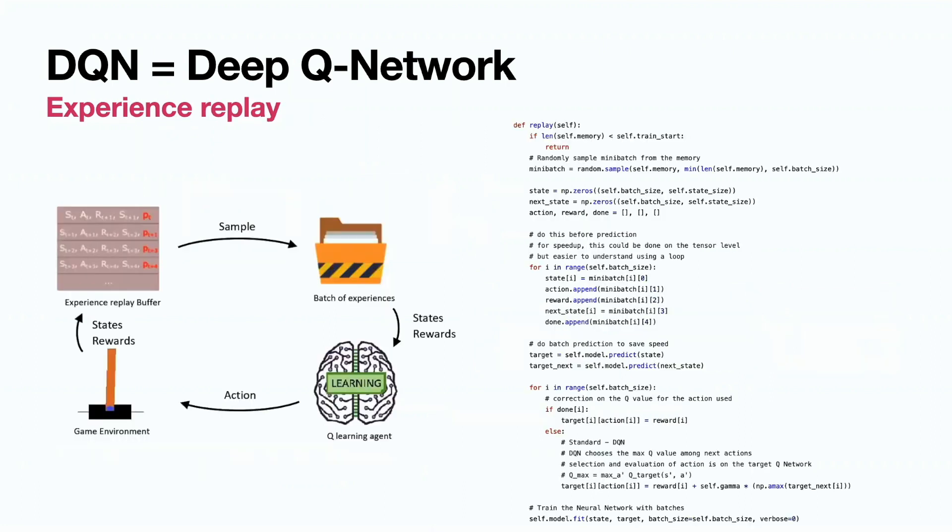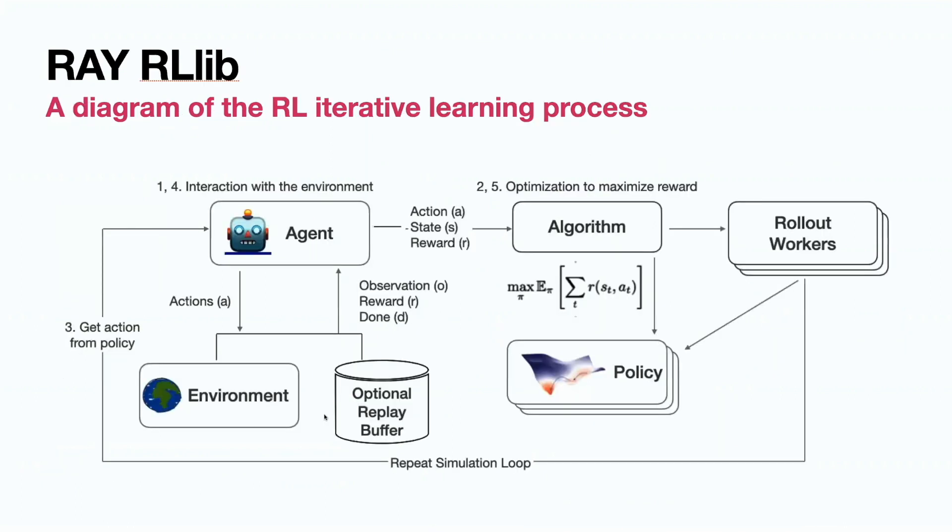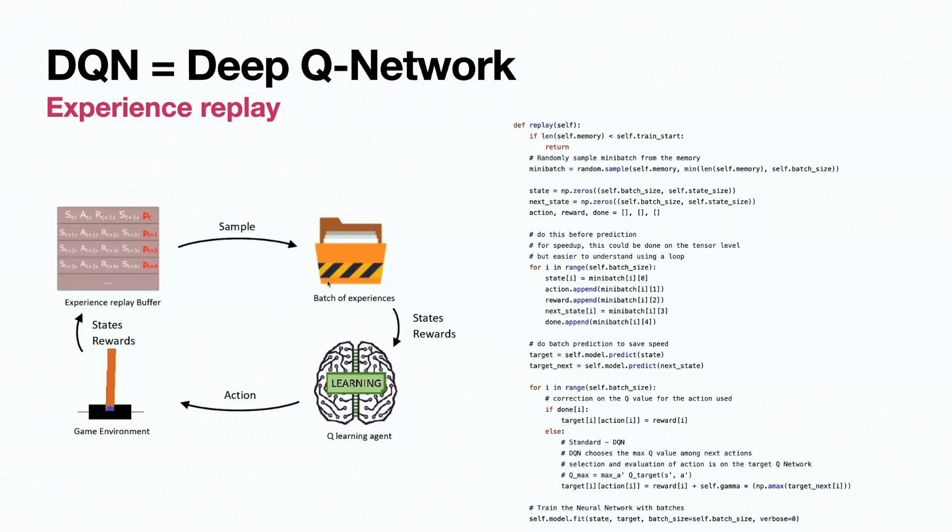Another concept that we have to talk about today is experience replay. I showed it briefly to you as this buffer. Remember, we were writing inside past states, actions, rewards, and new state tuples, also with optional end of episode indicator. First, we have a batch of experience. Think of it as responses of our environment. We pass action to the environment and then we're getting new tuples of past states, action, rewards, and new states.